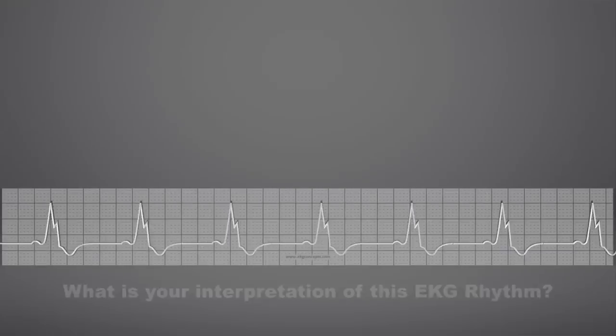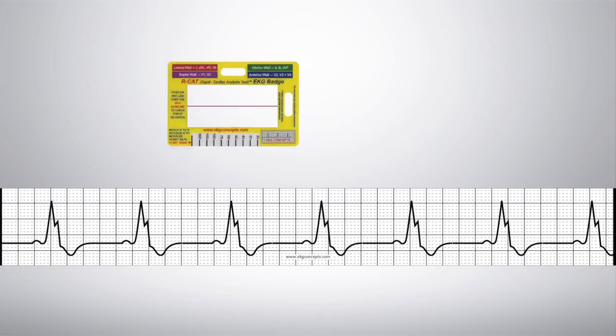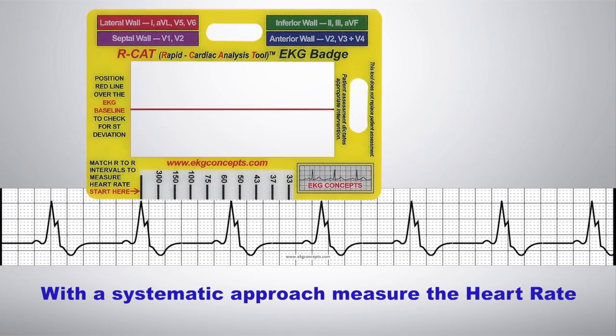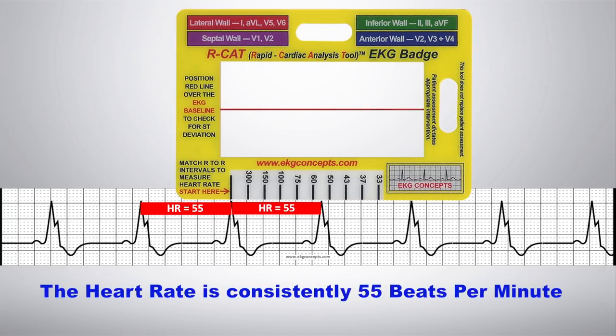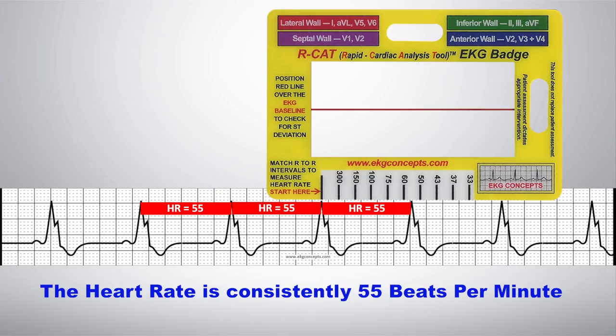With a systematic approach, use the RCAD EKG badge. First, match the R-to-R intervals with the calibrated heart rate line to measure the heart rate. You have a heart rate that's consistently 55 beats per minute.